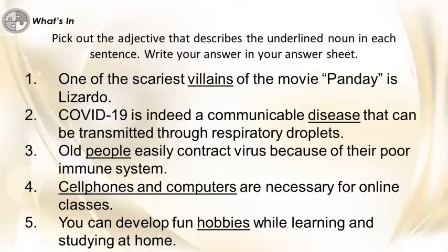Pick out the adjective that describes the underlined noun in each sentence. Write your answer in your answer sheet. 1. One of the scariest villains of the movie Panda is Lizardo. 2. COVID-19 is indeed a communicable disease that can be transmitted through respiratory droplets. 3. Old people easily contract viruses because of their poor immune system. 4. Cell phones and computers are necessary for online classes. 5. You can develop fun hobbies while learning and studying at home.